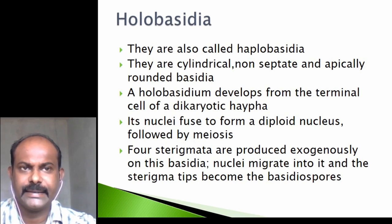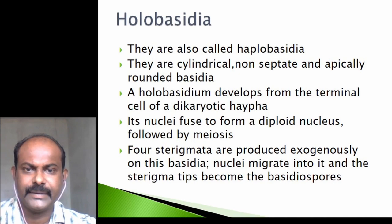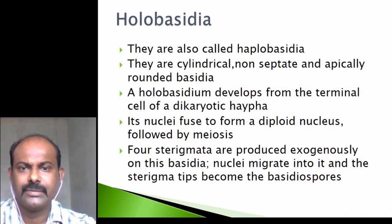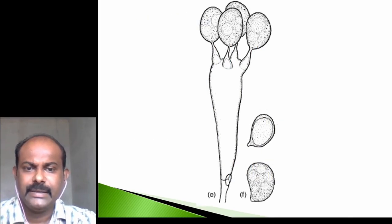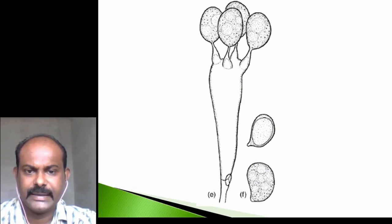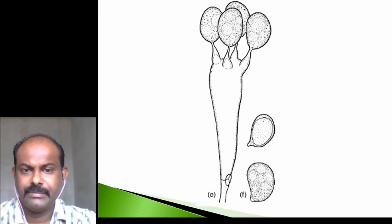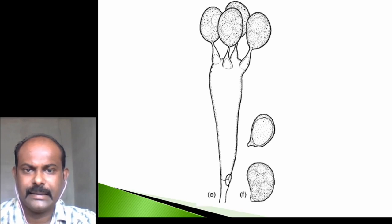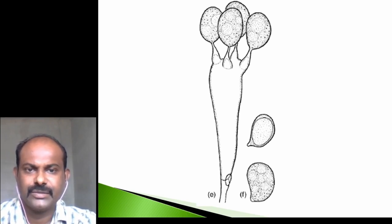Holobasidia means 'entire' — that means the entire tip cell of the dikaryotic hyphae becomes the complete basidium. The figure shows the structure of a holobasidium: the terminal cell of the dikaryotic hyphae, inside which the two nuclei fused and underwent meiosis, then four projections called sterigmata are formed. Into the tip of each sterigma, one of the four haploid nuclei migrates and it later transforms into a basidiospore.